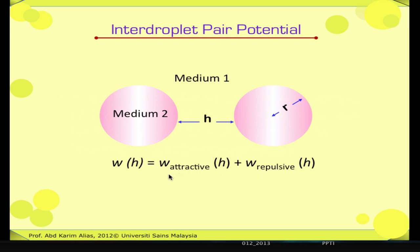Excuse me, Professor. Can I ask a question? Go ahead, Shima. You were saying that the inter-droplet pair potential W(H) is a net sum of the attractive and repulsive interactions. Does that mean the overall interactions between the droplets depends on the relative magnitude and range of the attractive and repulsive interactions? Yes, exactly, Shima. Good question — it shows that you are listening and thinking.